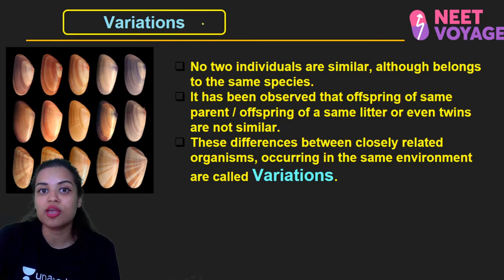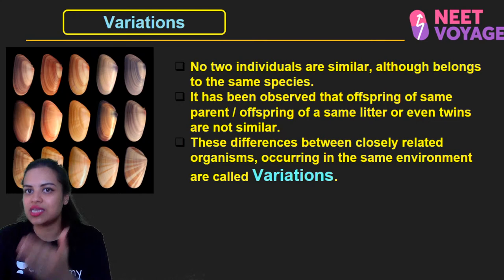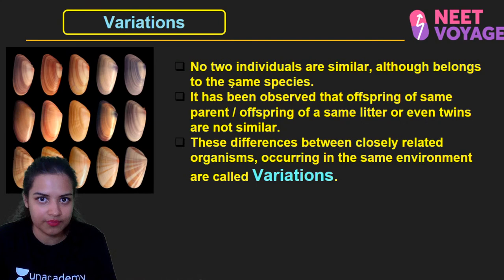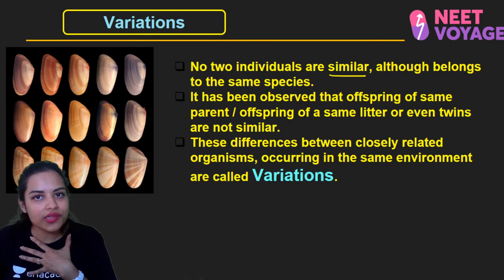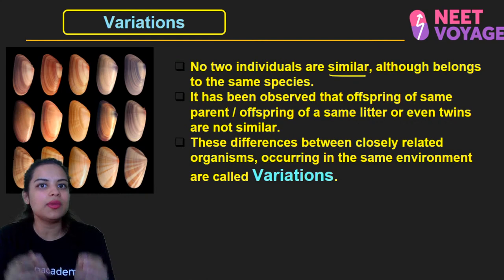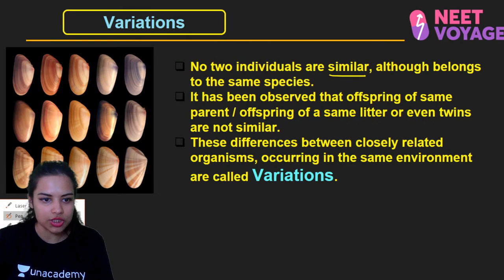Now let's talk about variations — another factor responsible for evolution. Variation within a species increases the chance of survival when conditions change. No two individuals are similar, even within the same species. Offsprings of the same parents and even twins can show differences. These differences between closely related organisms occurring in the same environment are called variations.